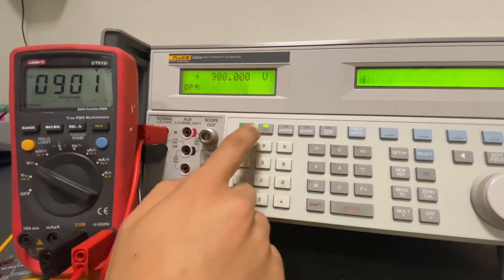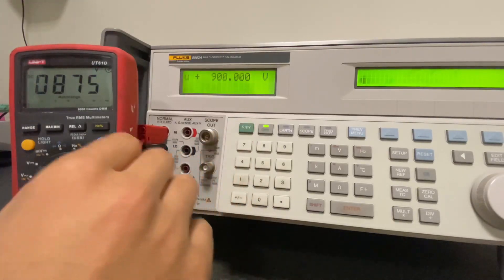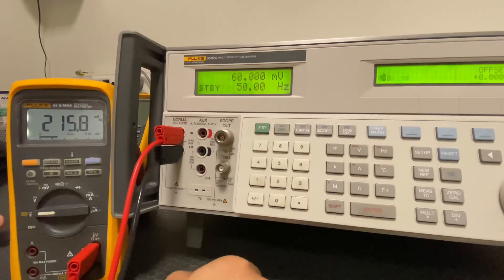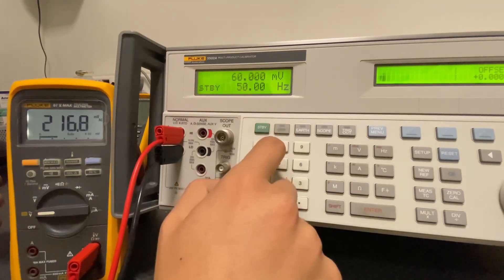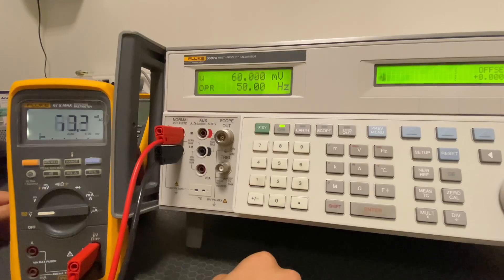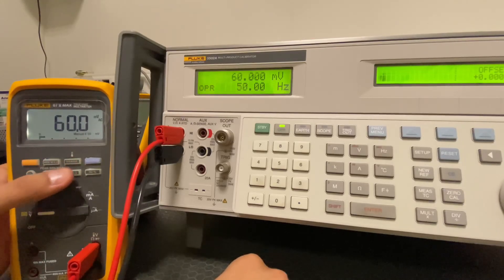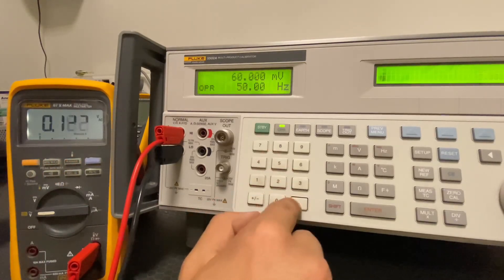We have completed this voltage comparison. Let's do the AC voltage calibration comparison. First we will check 60 millivolts with the Fluke, then we will look at 5.4 millivolts and switch to the Unit. There will be deviation in AC voltage. The important thing is that they remain at minimum level.